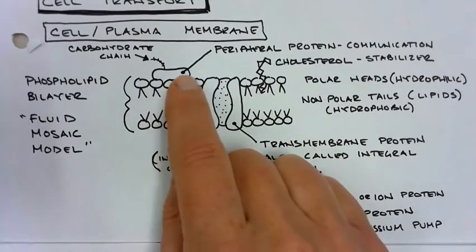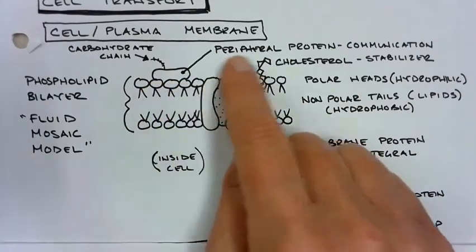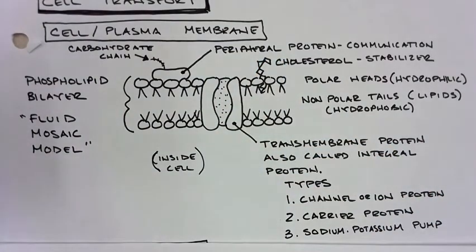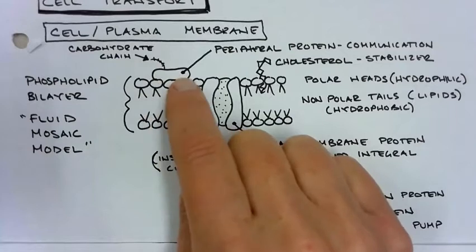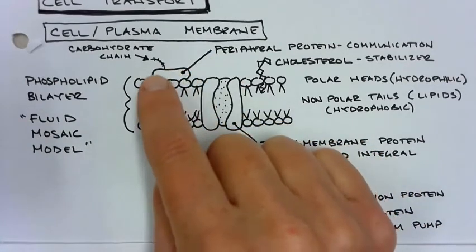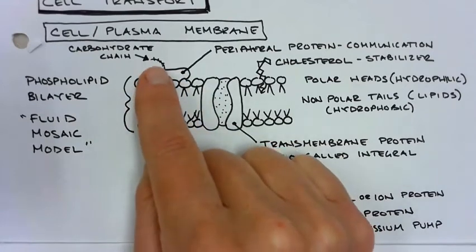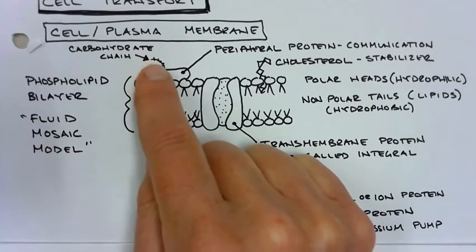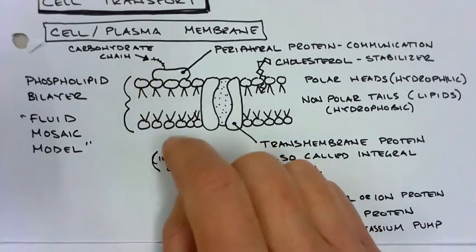We also have something called a peripheral protein. Peripheral is like a peripheral pass in rugby. You throw to the periphery, to the side, like your side vision. And so what this is about is communication. So this is how things communicate with other cells. And there's a little tiny chain off of here called a carbohydrate chain. And that's kind of like a little antenna.